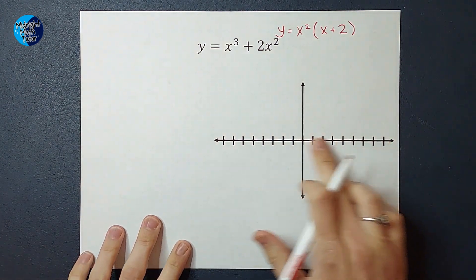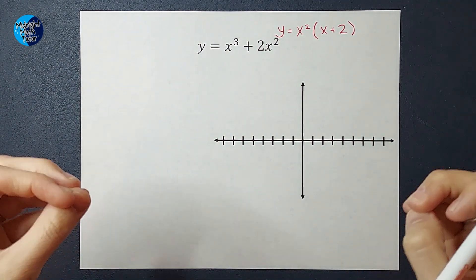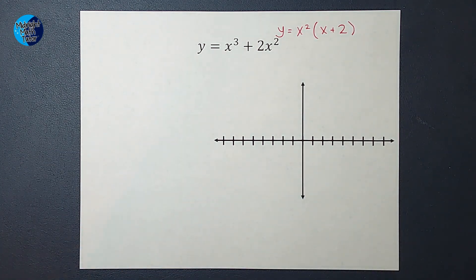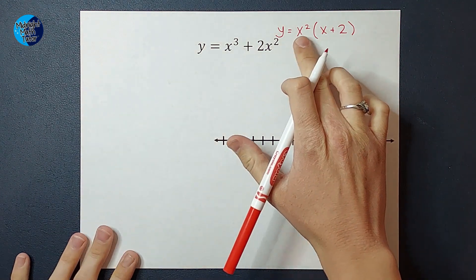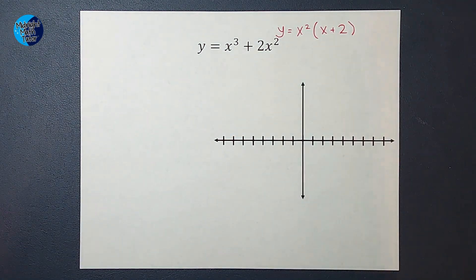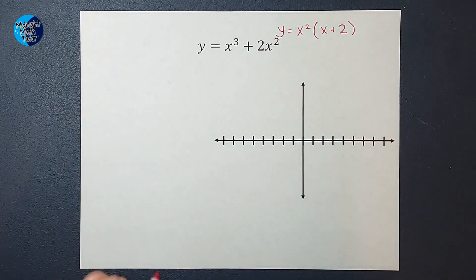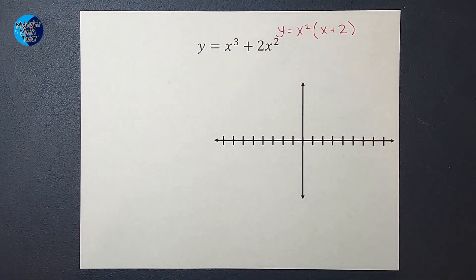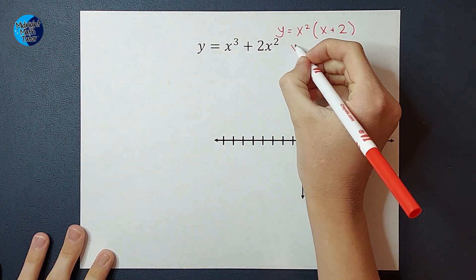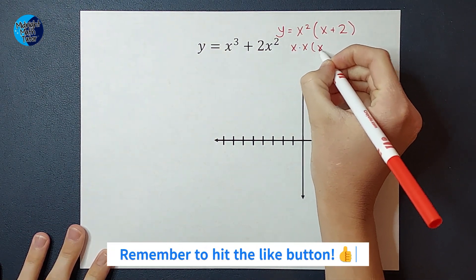So I factor and I find zeros. I'm looking for where the graph crosses the x-axis. That's when y equals zero, so we're setting it equal to zero. Basically what that means is we set each of these parts equal to zero.